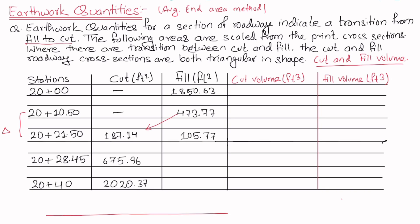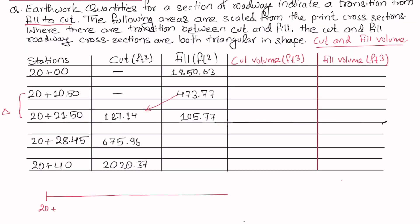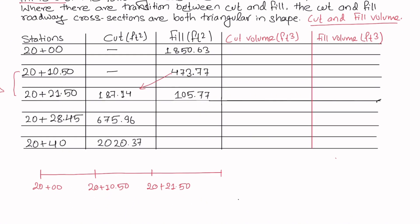Let's discuss a little about the average end area method. Looking at the top view of the six stations, we have station 20+00, then 20+10.50, then 20+21.50. The distance between station A and B is 10.50 feet. From B to C, the distance is 21.50 minus 10.50, which equals 11 feet.